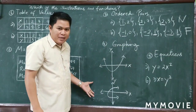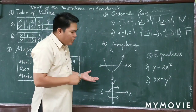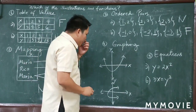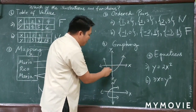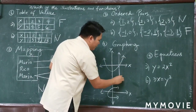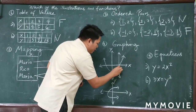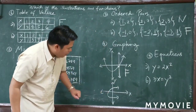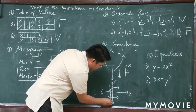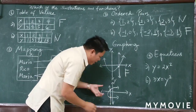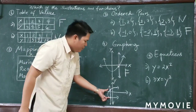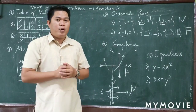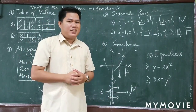For graphing, it is very easy to determine if a graph represents a function — you just apply the vertical line test. If the vertical line touches the graph only once, that is a function. For the second graph, the vertical line touches twice, meaning more than once. So that graph is not a function.